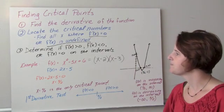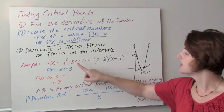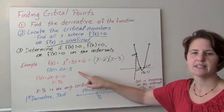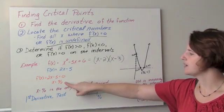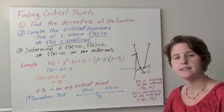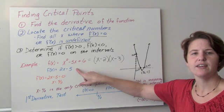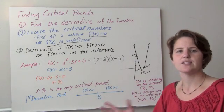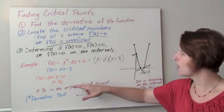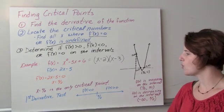Let's do our steps. The function f of x equals x squared minus 5x plus 6. When I take its derivative, I get 2x minus 5. When does 2x minus 5 equal 0? That would be when x equals 5/2, so x equals 5/2 is a critical point. It is the only critical point because the domain of 2x minus 5 is all real numbers, so the derivative is never undefined in this example.